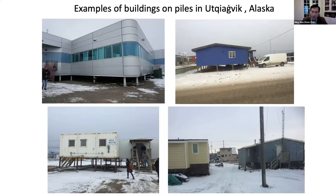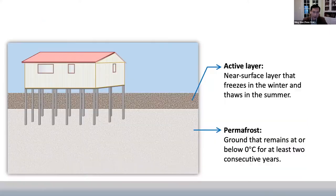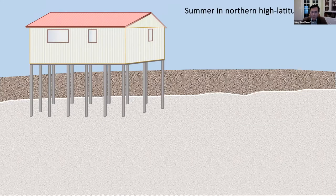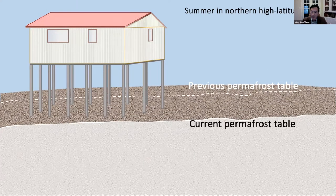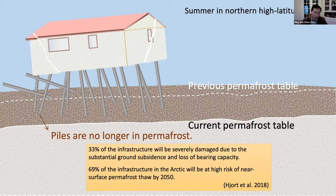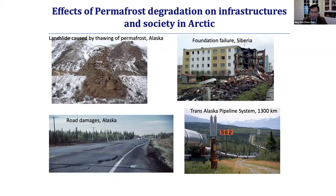Here are a few pictures I took in Utqiaġvik. You can see that regardless of building size or type, they are supported using piles. The piles go through the active layer — which is the seasonal freeze-thaw layer — into the permafrost, which is supposed to be a very rigid ground-bearing layer. But with ground temperature change, the active layer becomes thicker, and the pile end is no longer in solid permafrost. That can cause buildings to collapse and significant infrastructure damage.